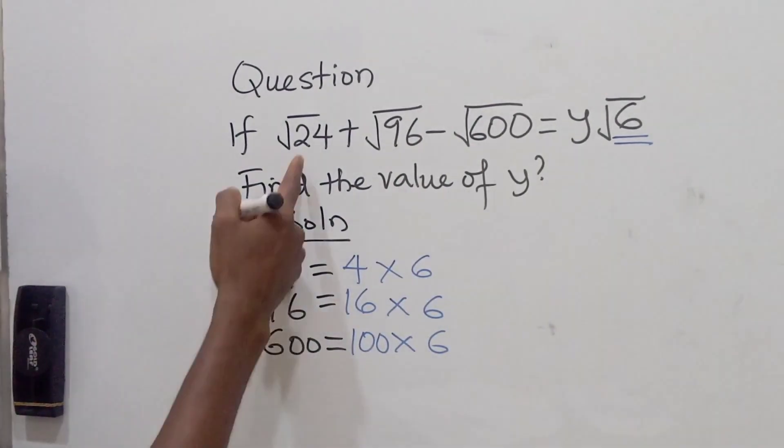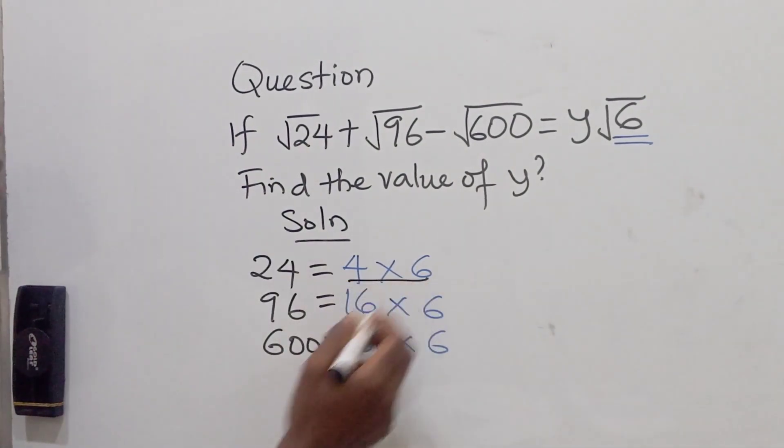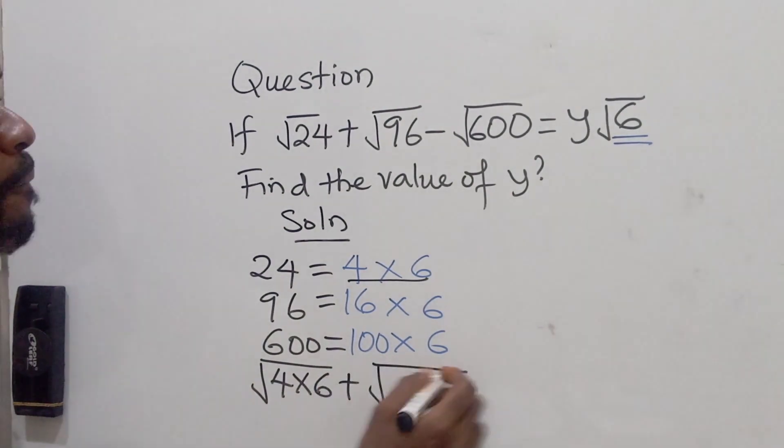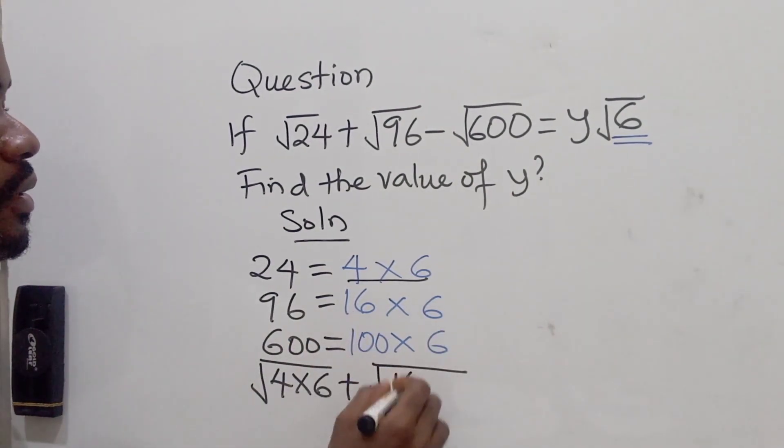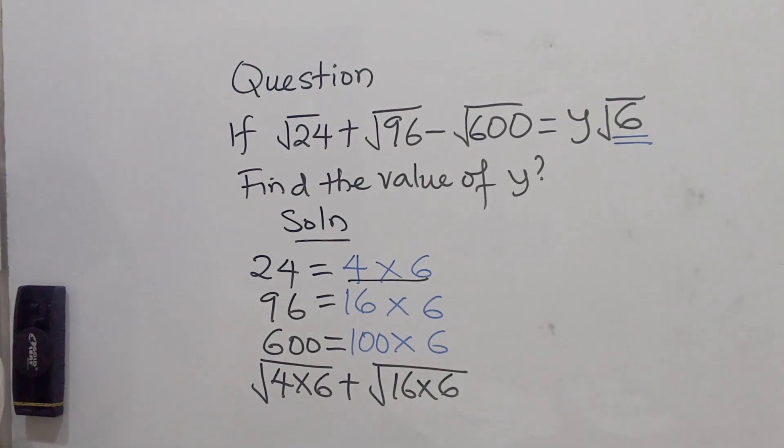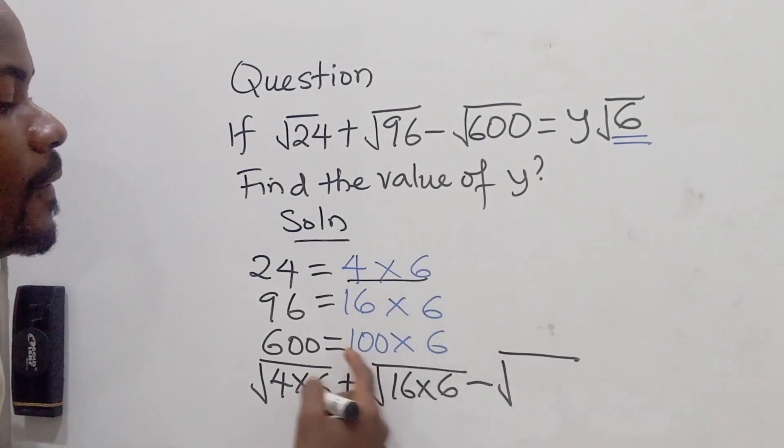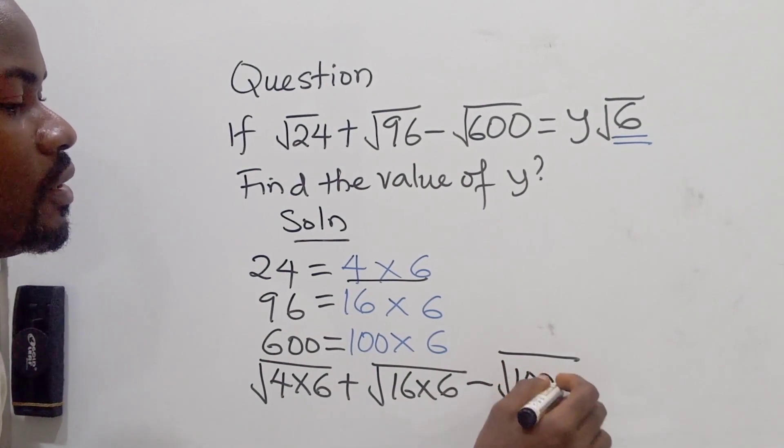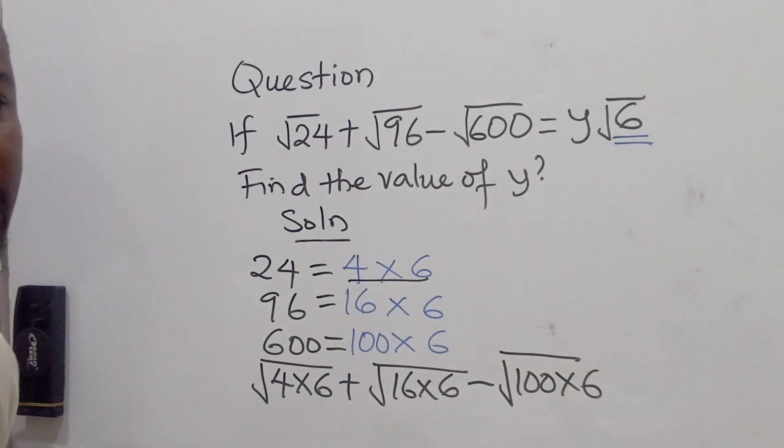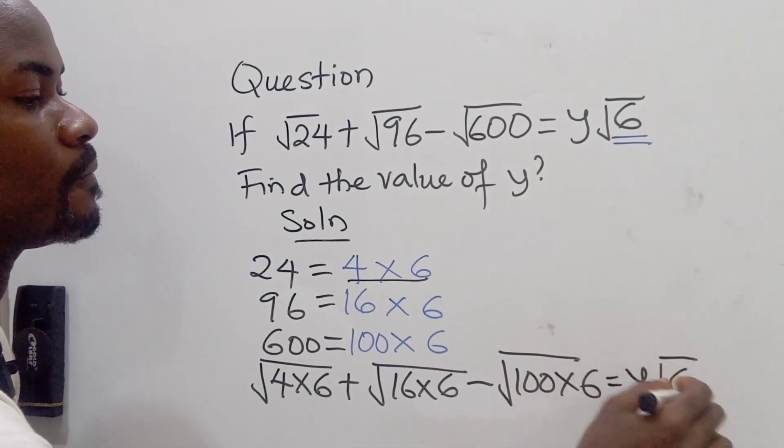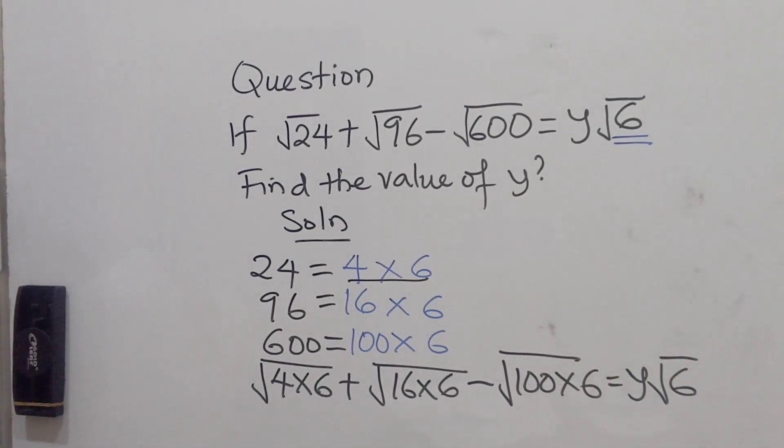So I'm going to have, instead of 24, we'll put this. So I have root 4 times 6 plus root, I have 16 times 6, minus root, we have 100 times 6. So this will give us what? Y root 6.